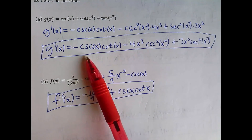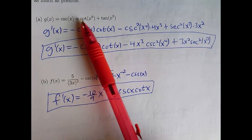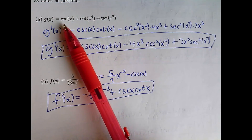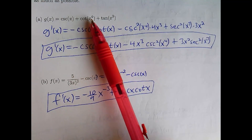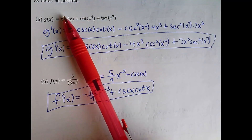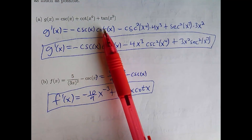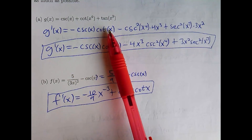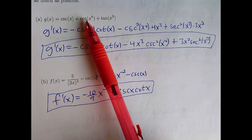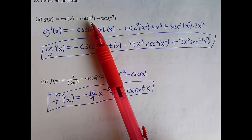The first question is to find the derivative. I put this on there because it's kind of like, do you know how to find the derivative of these trig functions? The derivative of cosecant is negative cosecant cotangent — pretty easy. The derivative of cotangent is negative cosecant squared.